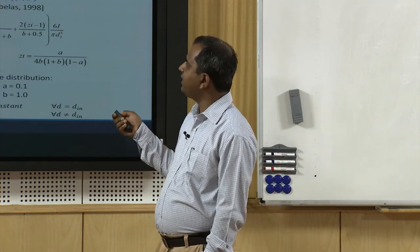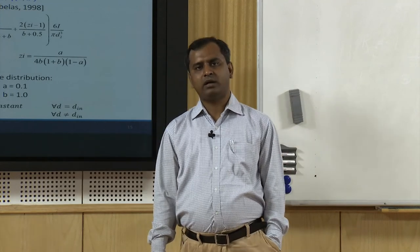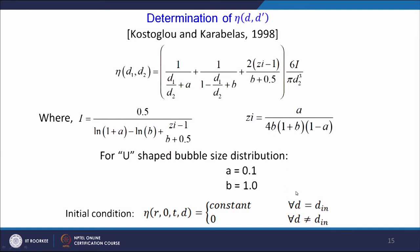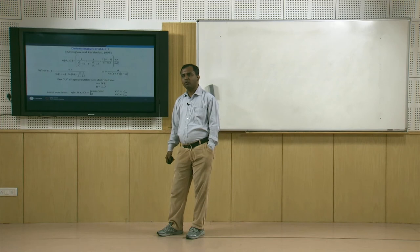The redistribution parameter eta(d,d') is a function of the diameters, with parameter i written as a function of values a and b. This a and b depends on the distribution of bubble sizes — inside a tube we consider parabolic distribution with a = 0.1 and b = 1. For the initial condition, we consider equilibrium-size bubbles everywhere at the inlet size, with no other sizes present. Starting from this, we advance forward in time using population balance and find out where a bubble size bigger than the channel diameter is forming — indicating initiation of slug flow.